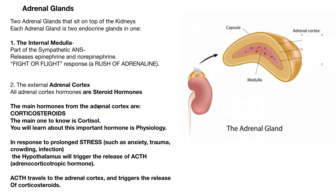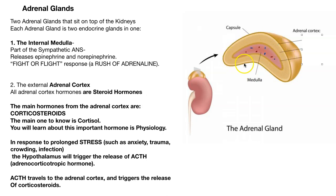Now we get to our next pure endocrine gland, the adrenal gland — you've seen this already. There is an adrenal gland on top of each kidney. And there are two parts to the adrenal gland: the adrenal cortex, which is the outermost layer, and the adrenal medulla, the inner layer. So we say each adrenal gland has two endocrine glands in it.